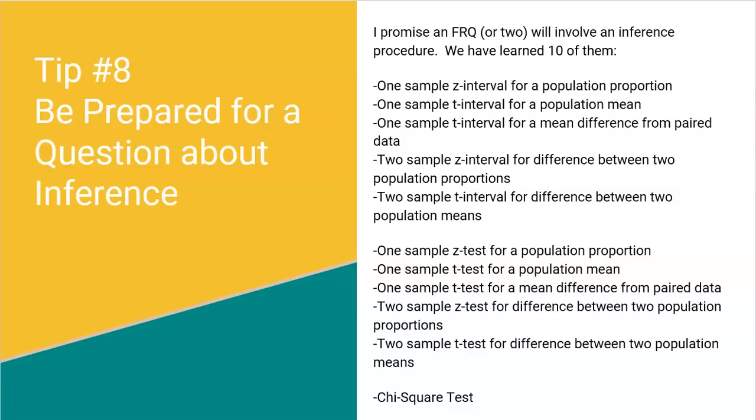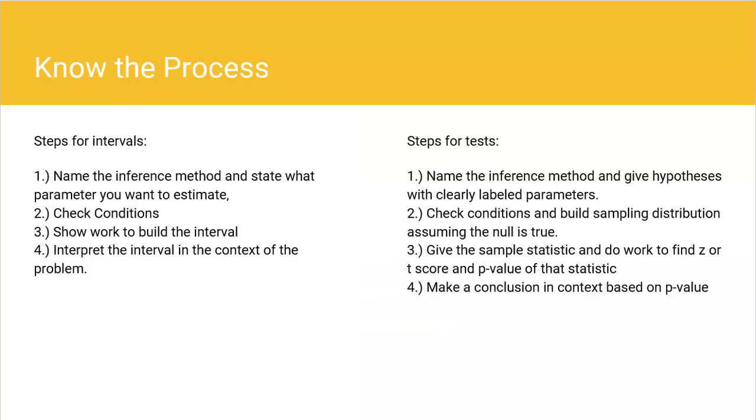Tip number eight, be prepared for a question about inference. I promise that an FRQ or two will involve an inference procedure. We've learned, I have 10 of them listed here, but we actually have learned many more. If you've done everything in your classes, some classes end early and don't necessarily get to everything. It all depends who your teacher is and where you are. But listen, there are tons of different inference procedures. There's intervals. There's tests. There's Z tests. There's one sample. There's two sample. There's chi-square tests. So make sure that you know how to do all of those. I have a really cool document, I call it the book of inference. It has examples and the procedures for every single type of inference. Shoot me an email at helpwithapstats at gmail.com if you want. And I can send that document to you that actually goes through all the different inference procedures. But I'm just telling you, don't overlook inference because one of the questions, maybe even two of them will cover it. When it comes to inference, make sure you know the process. Because maybe you don't remember how to do a specific thing, but you know the process and showing that you know that process can actually still get you some points.